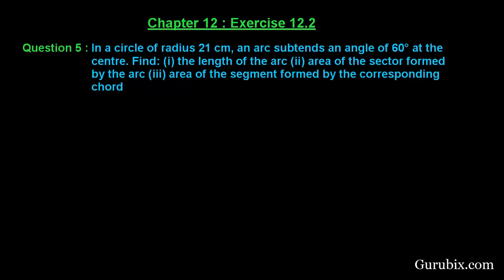Welcome friends. Let us solve question number 5 of exercise 12.2 of chapter 12. The question says: in a circle of radius 21 centimeters, an arc subtends an angle of 60 degrees at the center. Find: first, the length of the arc; second, the area of the sector formed by the arc; and third, the area of the segment formed by the corresponding chord.